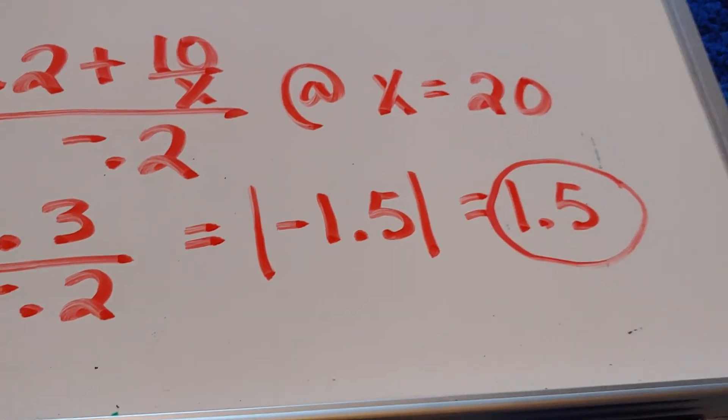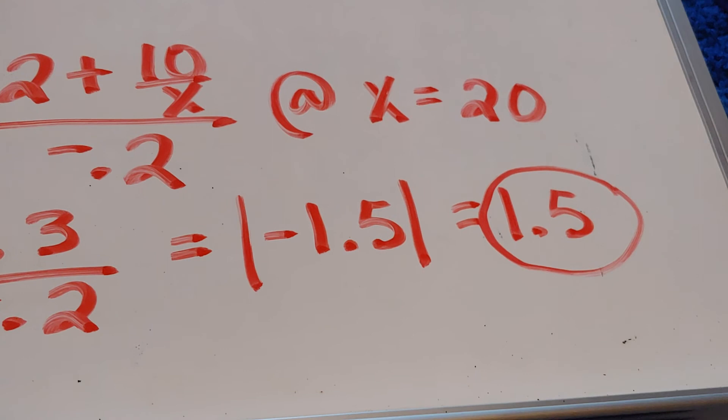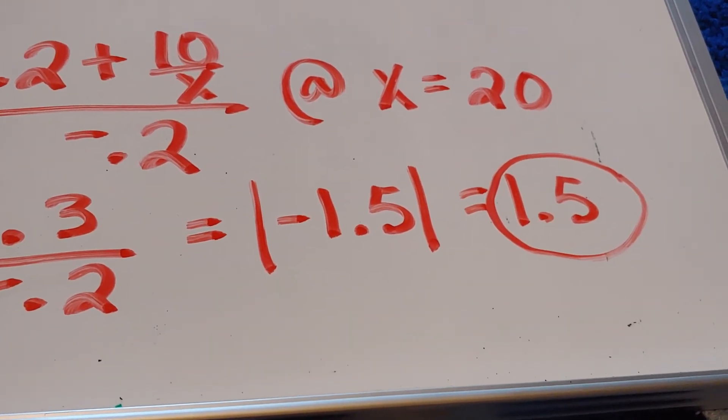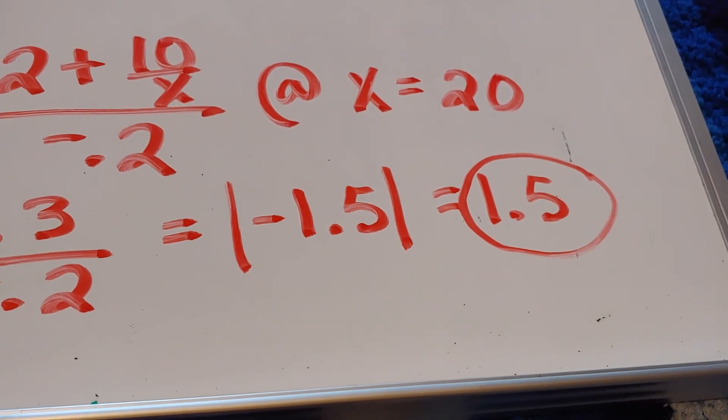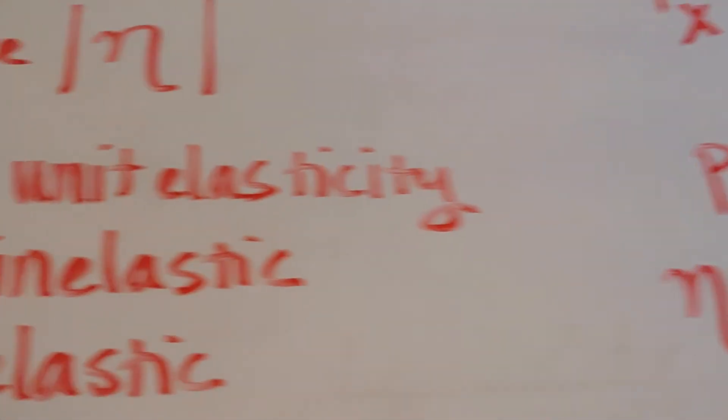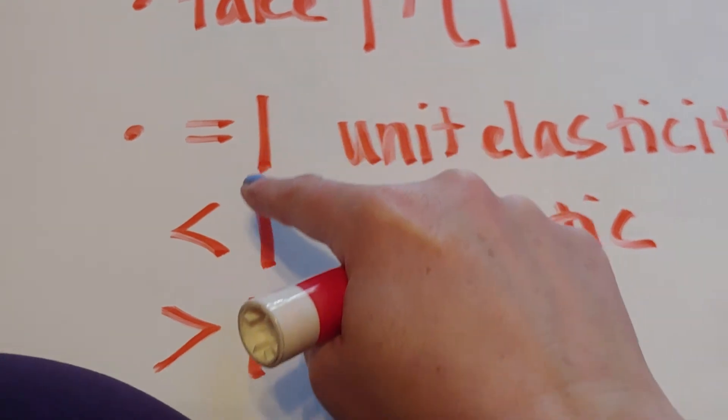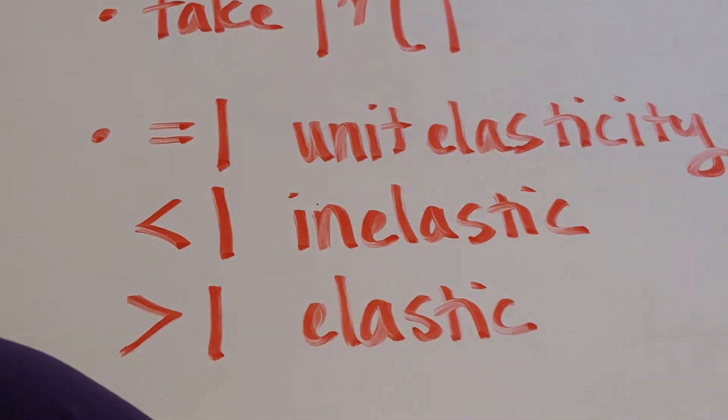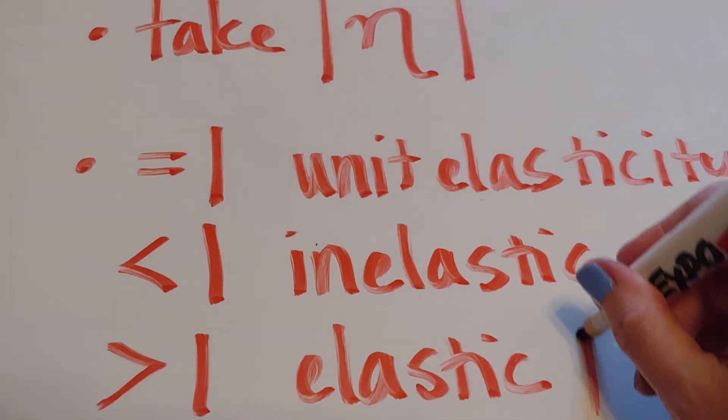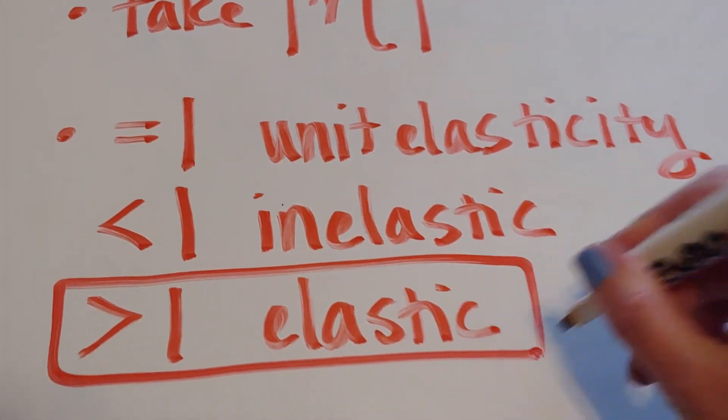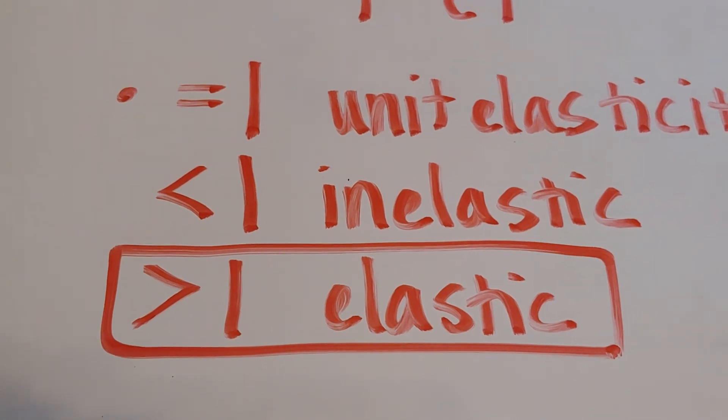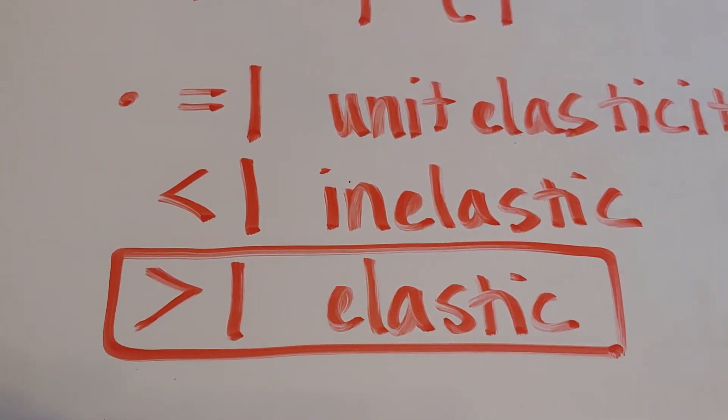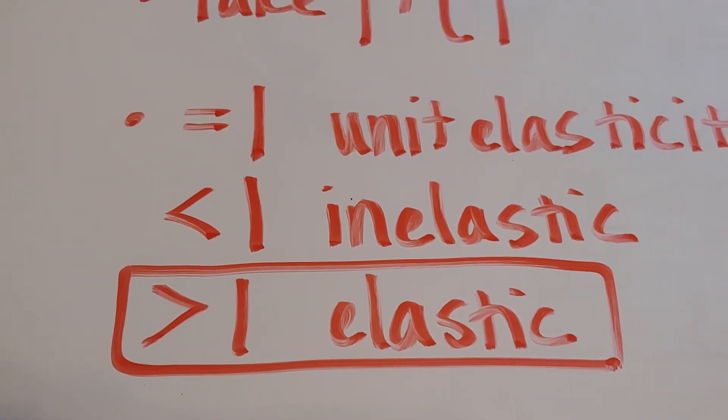Still with me? We finally get to make a call on this product to see if at x is 20, given this demand function, if it's unit elasticity, inelastic or elastic. So here's 1.5. Is 1.5 equal to 1, less than 1, or bigger than 1? Bigger than 1. So what's happening is that for this case, for this demand function, and x is 20, we have found that the item is elastic at that point. Alright. Good luck.